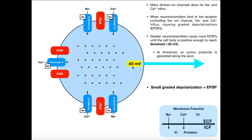If you don't get to negative 55 — say you're at negative 60 or even negative 56 millivolts — nothing happens. But if you get to negative 55, you get an action potential. There's a region at the initial part of the axon, at the junction between the cell body and the axon itself, called the axon hillock. The axon hillock generates the action potential, and it propagates unidirectionally down the axon. The action potential always goes in one direction, is always the same strength — it's an all-or-none phenomenon.